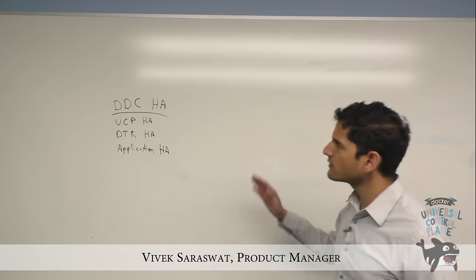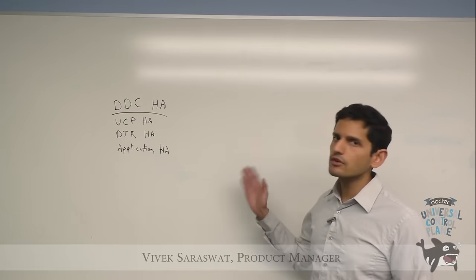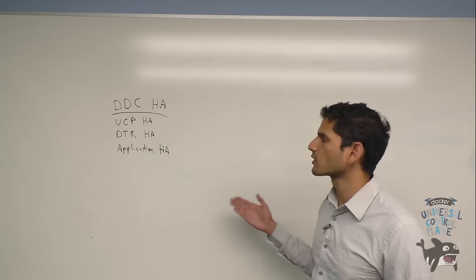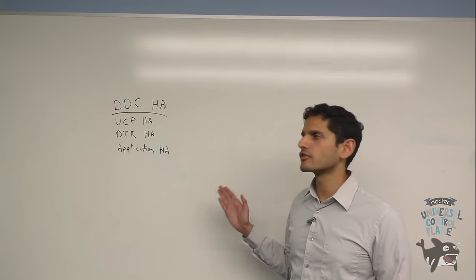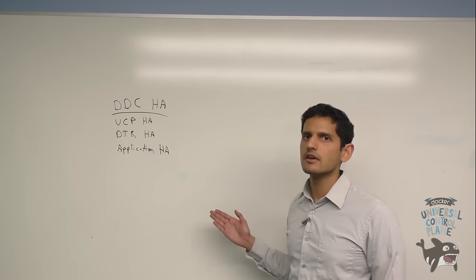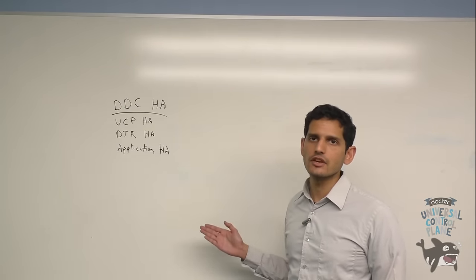Today we're going to talk about three different areas of Docker data center based HA. Universal control plane for managing and orchestrating applications on your cluster. Docker trusted registry for secure image registry and collaboration. And finally, high availability for your applications and containers.